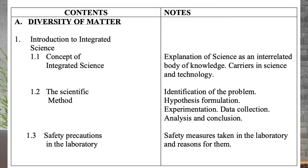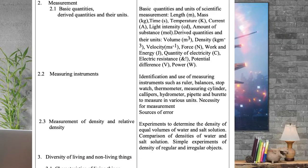Looking at the Integrated Science Syllabus, the first thing you should know is the diversity of matter, which covers the concepts of integrated science — biology, chemistry and physics — the scientific method, safety, measurements, physical quantities, characteristics of living things such as movement, respiration, nutrition, and other characteristics of living things. These are very important for you to know in integrated science.